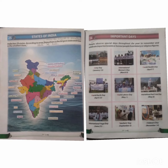So students, where do we live? We live in a country, India. India has 29 states. According to area, Rajasthan is the largest state and Goa is the smallest state. So students, name the largest and the smallest state of India — the largest is Rajasthan and the smallest is Goa.